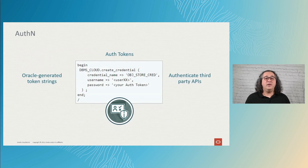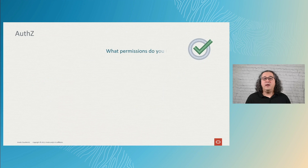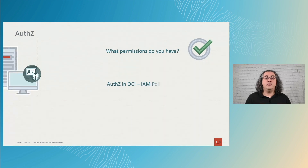Auth tokens are used for third-party systems that are not able to use the API signing key method. OCI will generate token strings that will be used on those systems. One example of a system that uses tokens is the Swift API. Once authenticated, it's time to know what you can do — this is defined by the IAM policies.